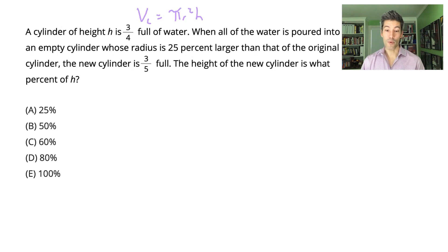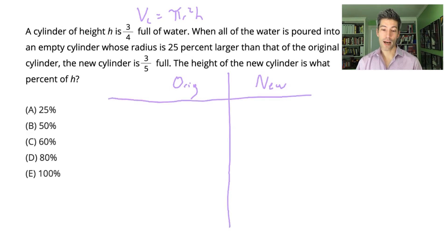So whenever I see an opportunity to pick smart numbers, I am going to be sure to be really organized here. I know I'm going to have some information about the original cylinder and information about the new cylinder. And so I think a grid will help me keep track of this info.